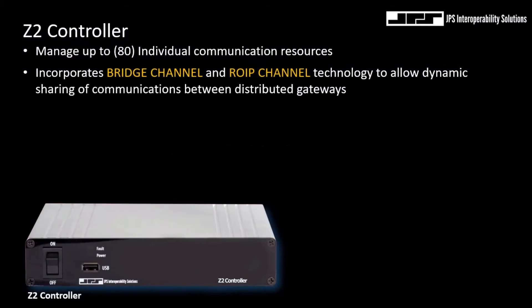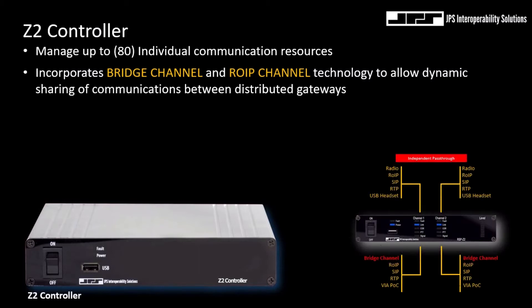The Z2 controller allows for the management of multiple RSP Z2 dual channel gateways to create large distributed communication systems. As you can see in the image of the RSP Z2 gateway at the right, the Z2 controller will support up to 40 individual RSP Z2 gateways, which equates to 80 communication resources. That includes radio talk groups, SIP, RTP, JPS ROIP, push-to-talk over cellular applications such as ESChat and JPS Via, and will even support USB headsets.